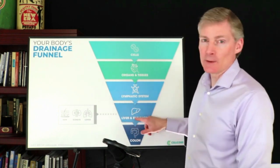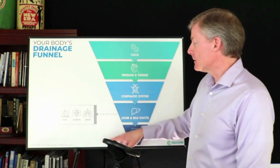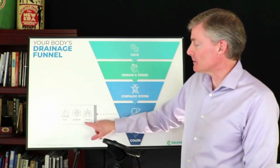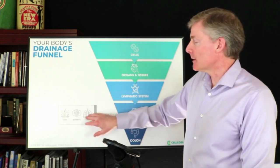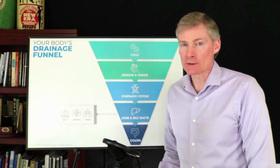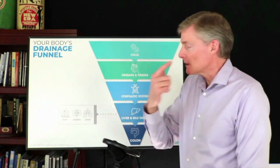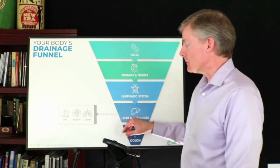The point is these have to be working well and that includes other organs of drainage. For example here we have lungs, kidneys, and skin. The lungs and the skin are secondary organs of excretion including the sinuses. But the kidneys are very important too just like the liver.